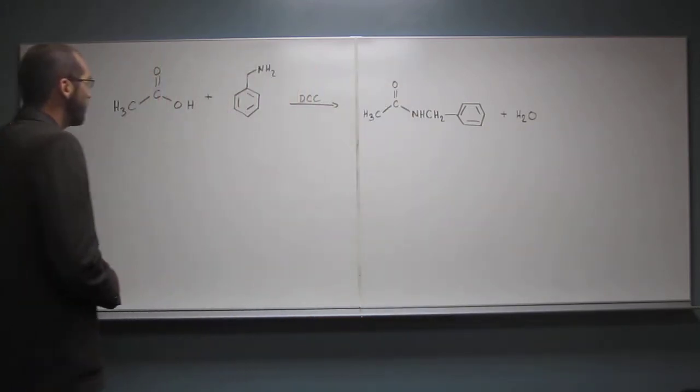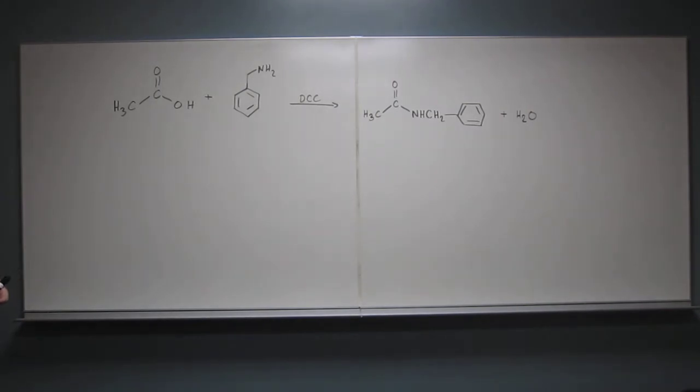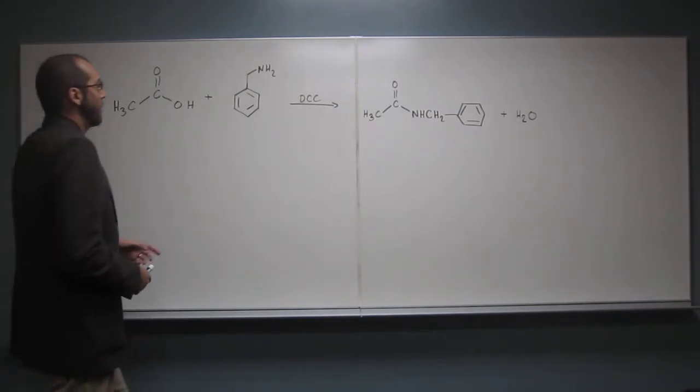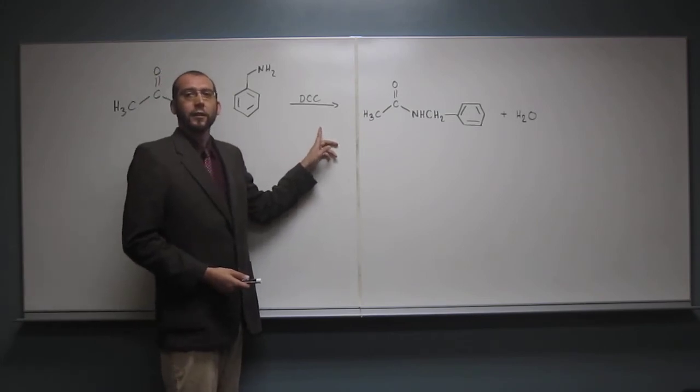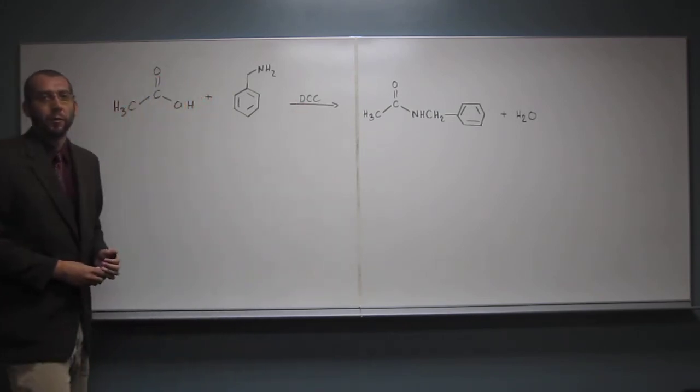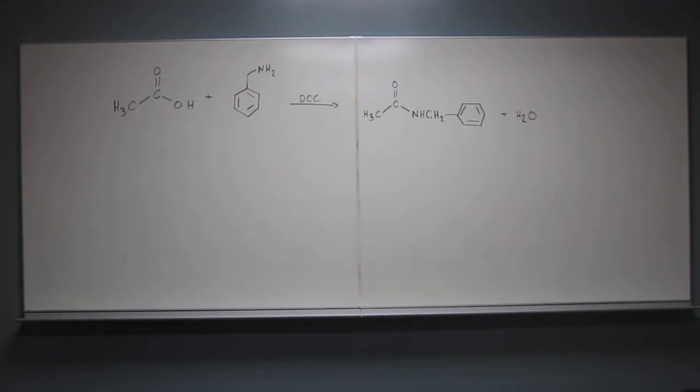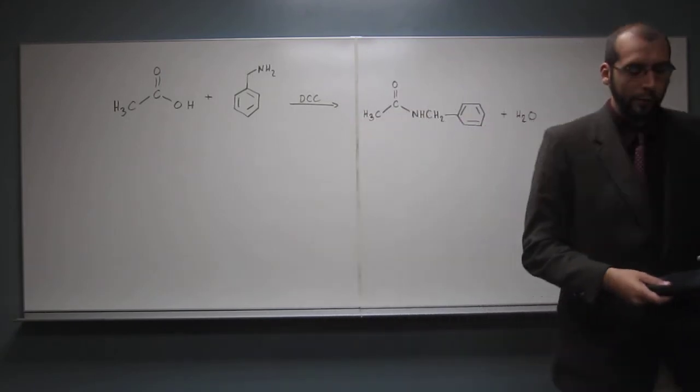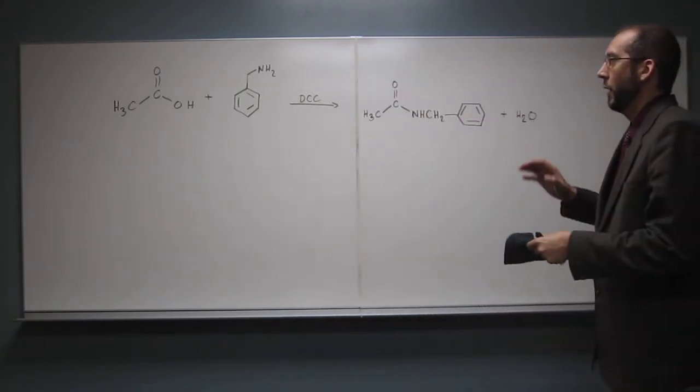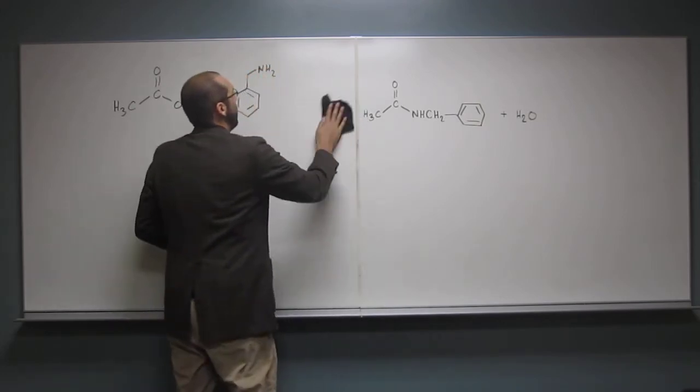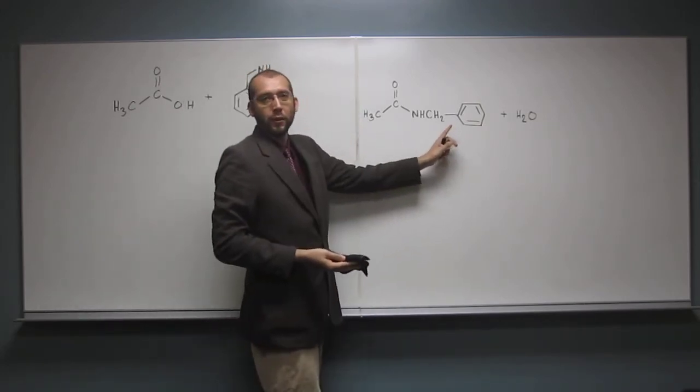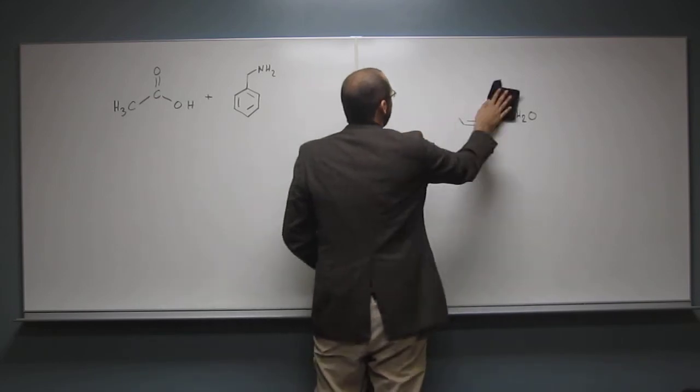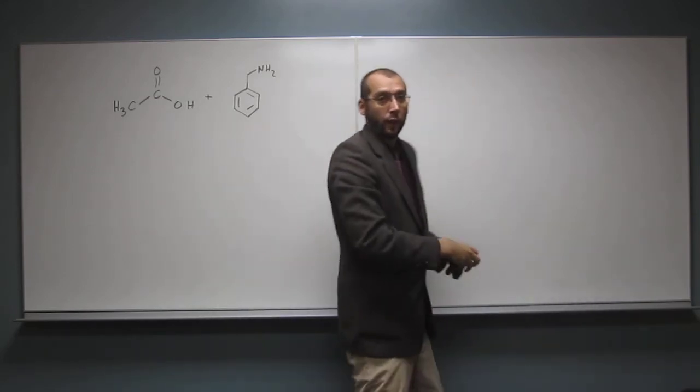Since it asks us to write the mechanism, we're going to have to erase all this. Unfortunately, if we don't know what DCC looks like, we're kind of up a creek. We won't be able to do this one at all. Personally, I like to put them all into a bondline form and start from there. This is a rather involved mechanism. Remember this one, because you have to remember where you're going or you're never going to get there.